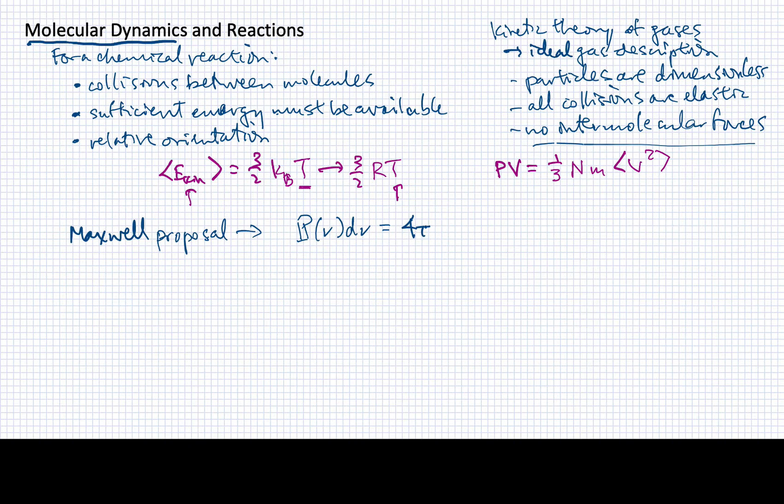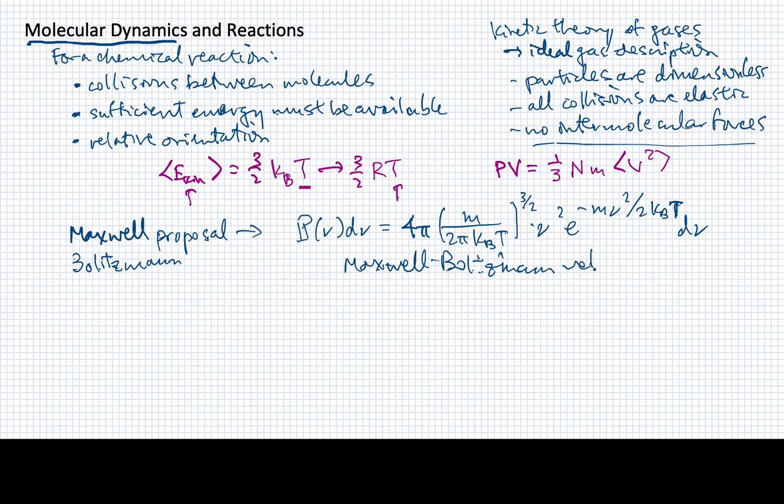This distribution, I'll remind you, had the following form, and this is a normalized function. That's why we have all these crazy constants here in the front. But the point was that this told us how to calculate the probability that the molecule would have a certain velocity or be within a certain range of velocities if it was at temperature T, and you'll see that T is contained up here and also down here in this expression. This Maxwell expression was later derived more formally by Boltzmann, and so this is called the Maxwell-Boltzmann velocity distribution.